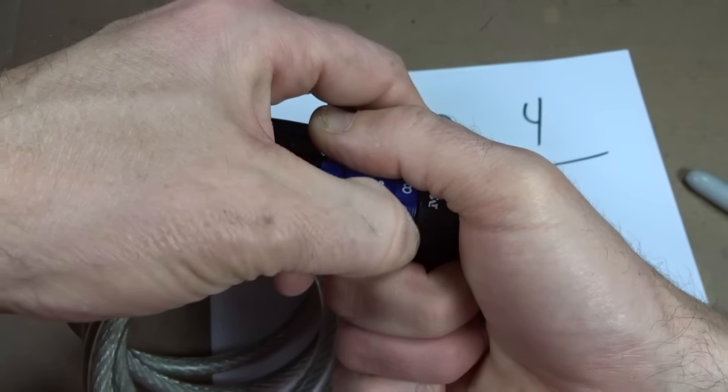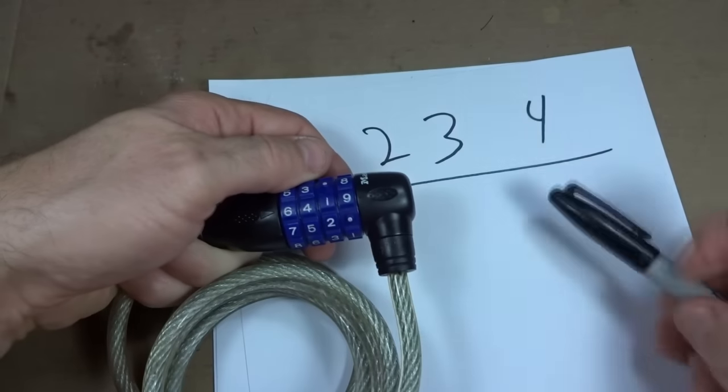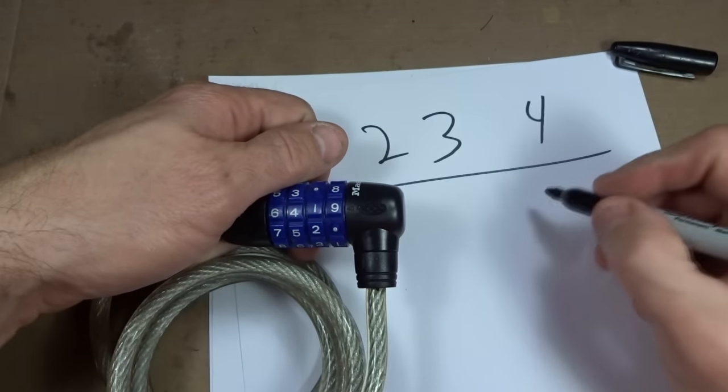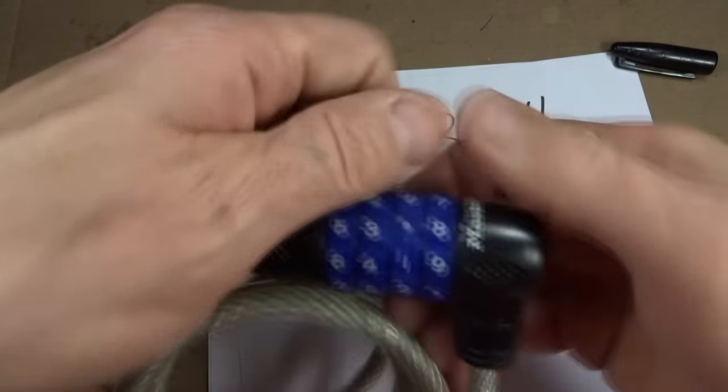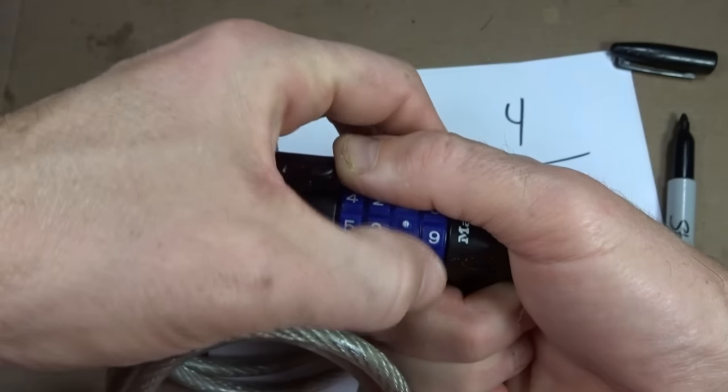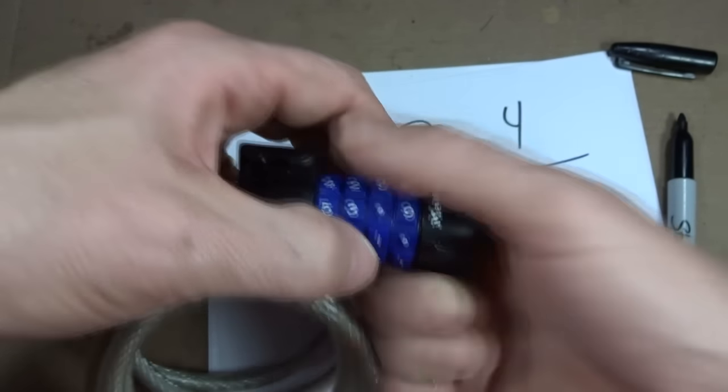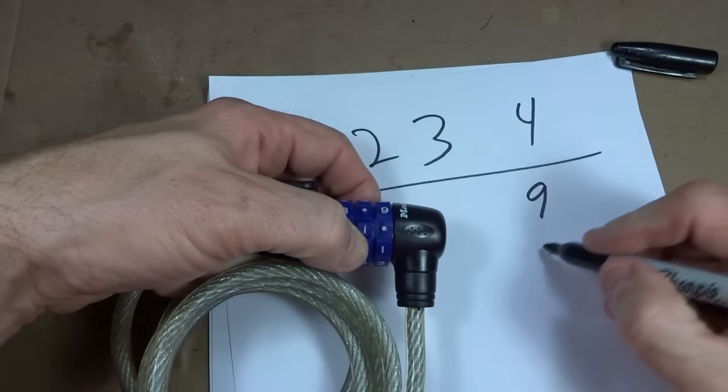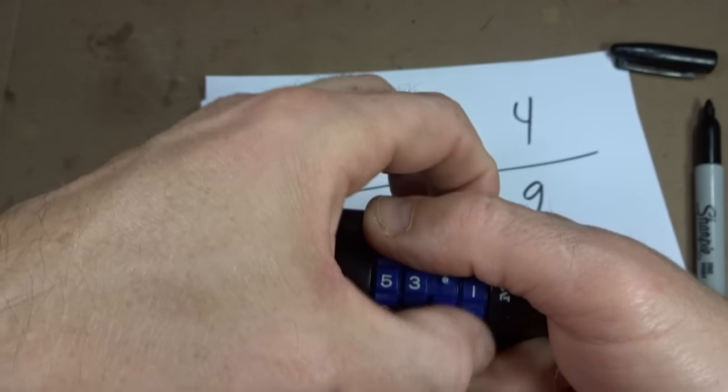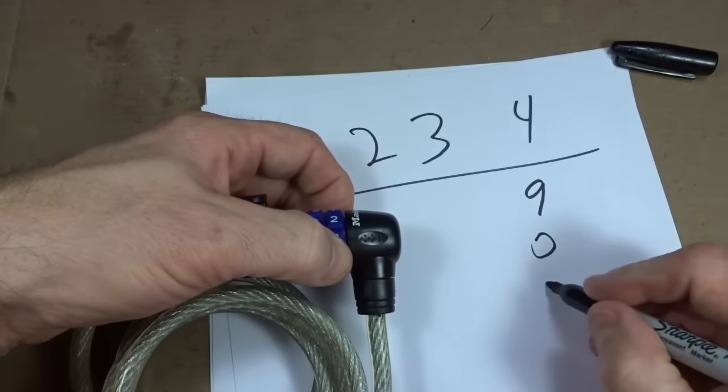So and it kind of catches here at the nine. Here's the little line there. So what I'm going to do is I'm going to record down the numbers where it catches: nine. Then rotate it around here. And it kind of caught at that zero, that little dot there is a zero. Three.